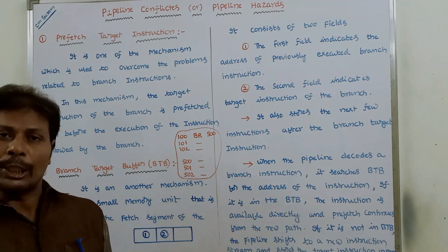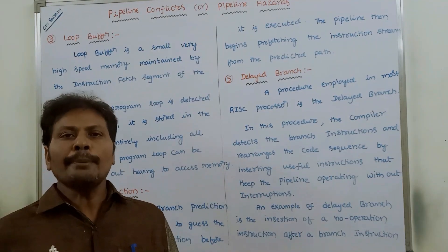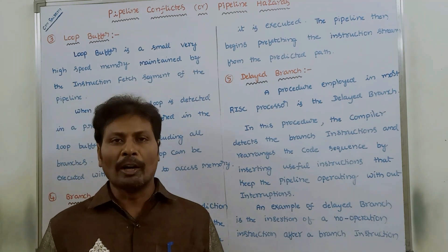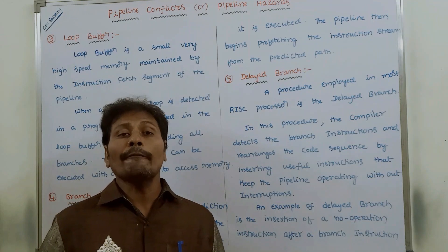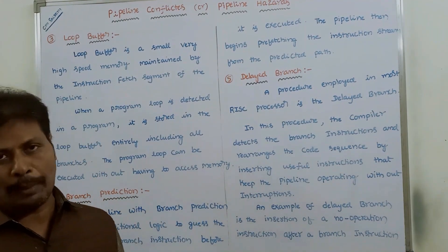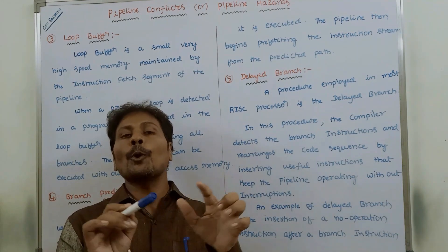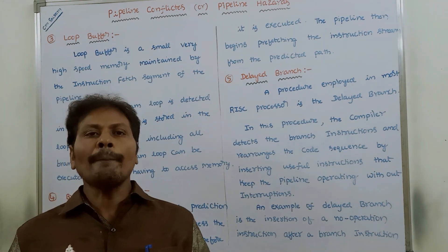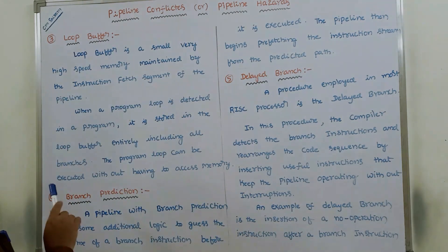The third mechanism is the loop buffer. A loop buffer is a small, very high-speed memory maintained by the instruction fetch segment of the pipeline. Whenever a program loop is detected, it is stored entirely in the loop buffer, including all branches. The program loop can then be executed without having to access main memory.